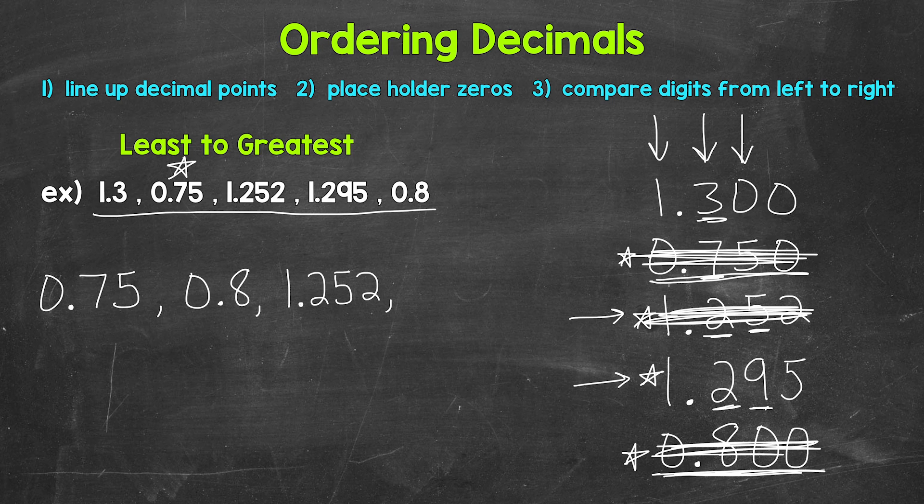Now another way to think about that. We could have thought 252 thousandths compared to 295 thousandths. 252 thousandths is less than 295 thousandths. Now we are down to our last two decimals.